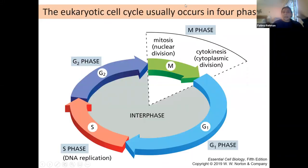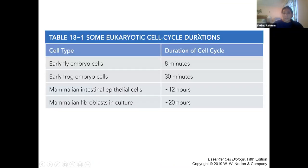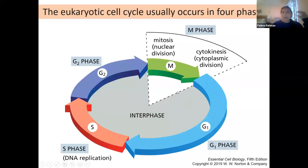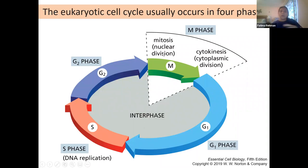Looking at the general cell cycle, whether it's 8 minutes, 30 minutes, 12 hours, or 20 hours, every cell still has to go through all its phases. There are four phases you should be familiar with already, so this is a bit of a review.